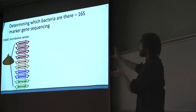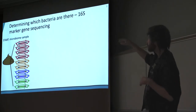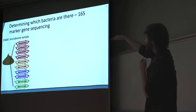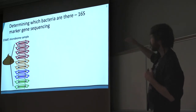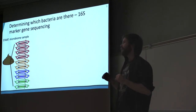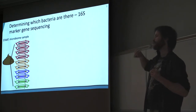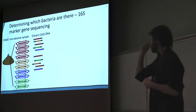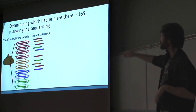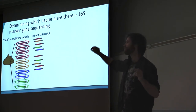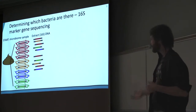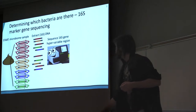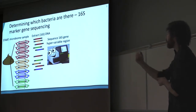Here's a simple example — we have a stool sample with four different types of bacteria. Within each of these bacteria is the 16S ribosomal RNA gene. To quantify the bacteria, we specifically sequence the hypervariable region of the 16S gene. The first step is to extract the DNA. Each bacteria has a different 16S gene with a different hypervariable region — that's represented by the different colors. We extract the DNA and then sequence the hypervariable region of the 16S DNA.